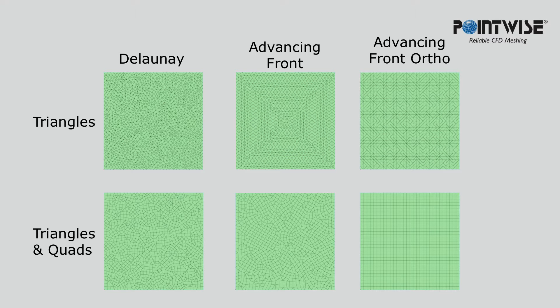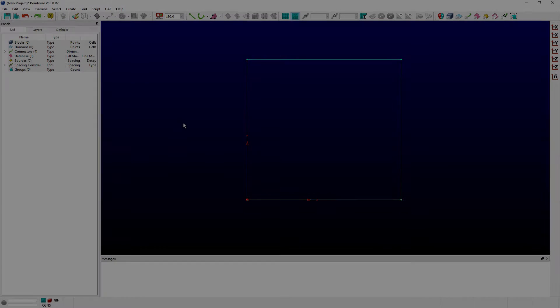choosing between these two algorithms is more a matter of preference. While Delaunay and Advancing Front algorithms tend to populate surface grids with equilateral triangles, the Advancing Front Ortho algorithm tends to populate them with right-angled triangles.